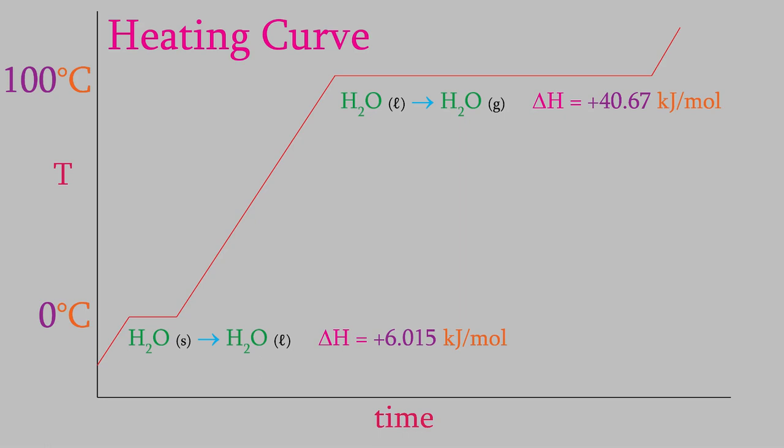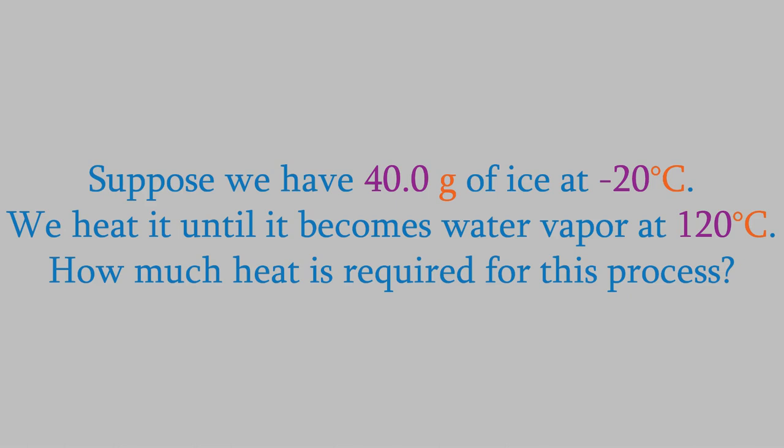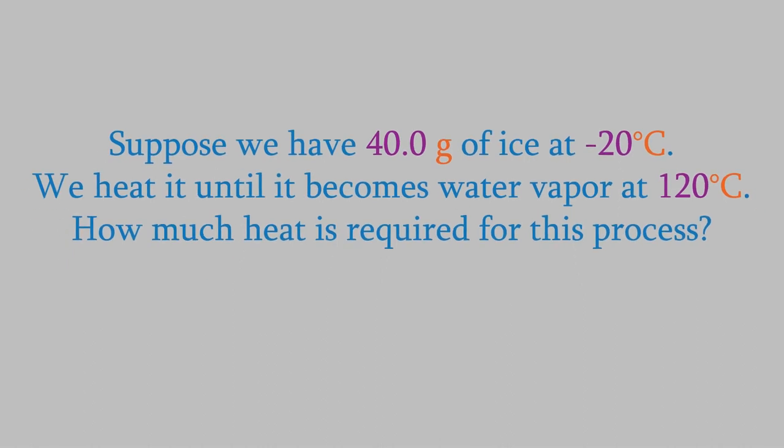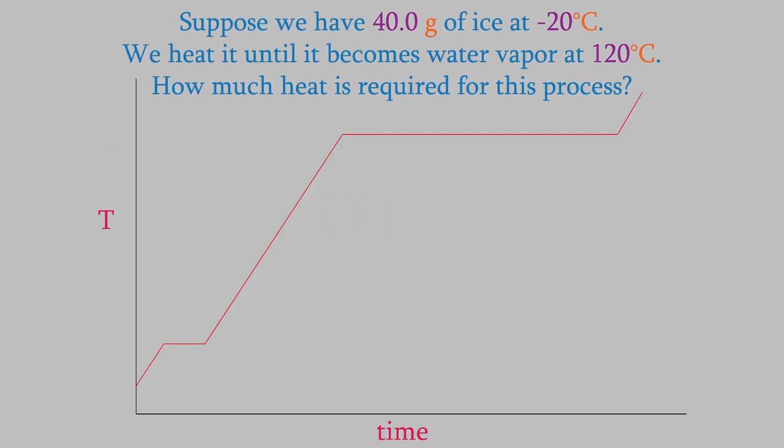So, what can we do with that information? Plenty. For instance, suppose we have 40 grams of ice at negative 20 degrees Celsius, and we want to heat it until it's a gas at 120 degrees. How much heat will that take? To find out, we can use a heating curve like this one. As you can see, the graph has five different sections, one where we heat the ice, one where the ice melts, and three more where the water's heated, the water boils, and the water vapor is heated. We can figure out the amount of heat it takes for each of these steps, and then add them together to get the overall heat.